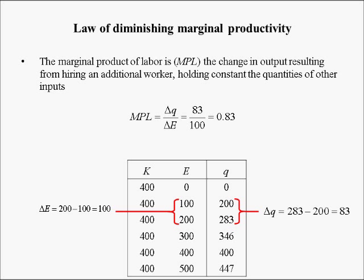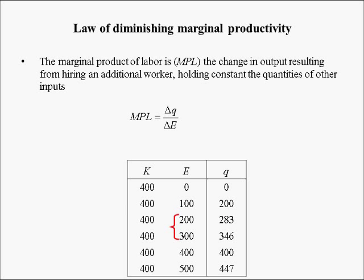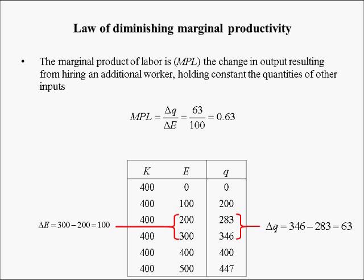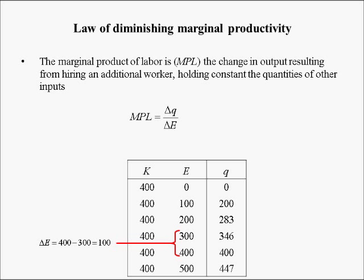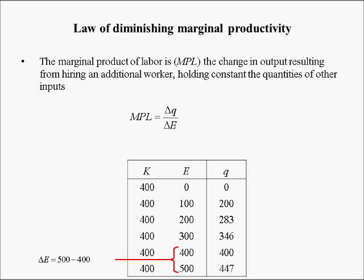Marginal product of labor is falling as we increase the number of employees. Increasing employees by another 100 increases output by 63 — on average, adding one employee increases output by only 0.63. Then output increases by only 0.54 per additional employee in the next range, and 0.47 in the range from 400 to 500 employees. So the marginal product of labor is falling as the number of employees increases.